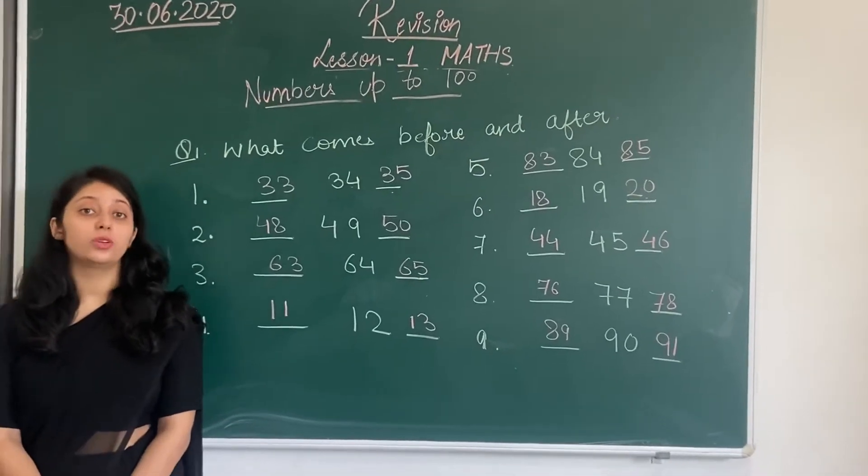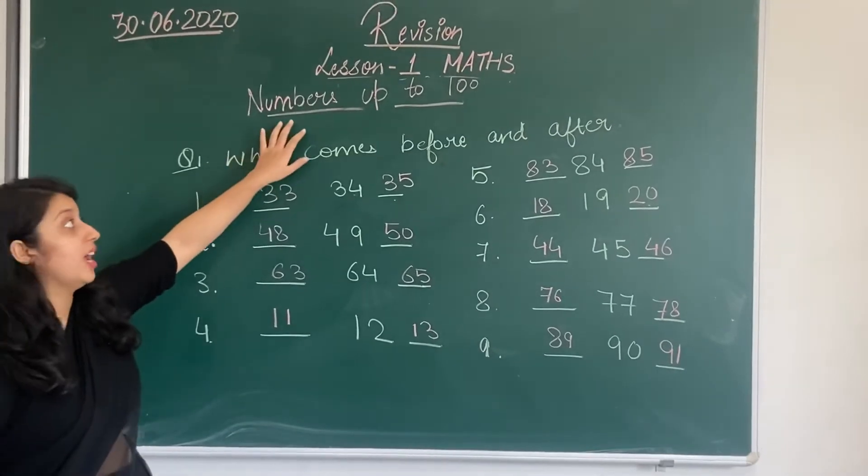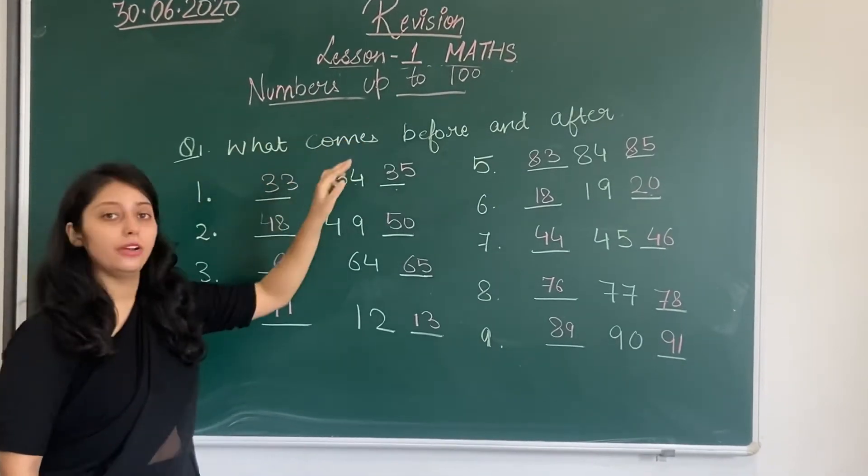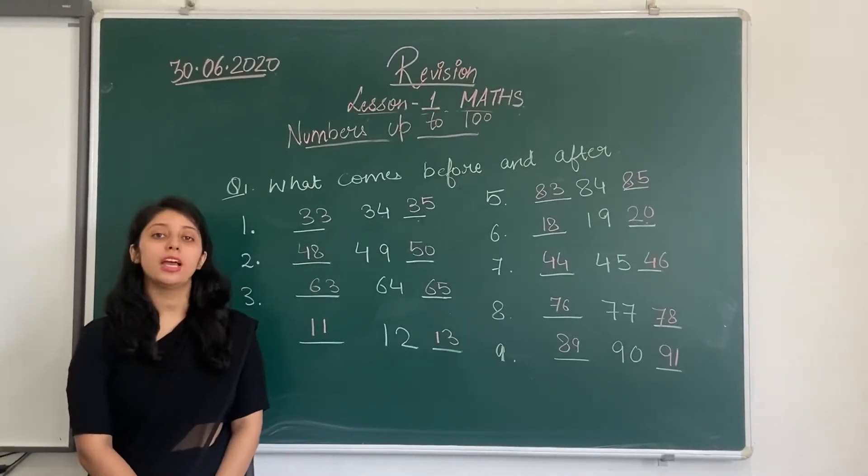So the very first thing that we are going to do is revision. Revision of first chapter that is numbers up to 100. The first thing that we learnt in this chapter was missing number.